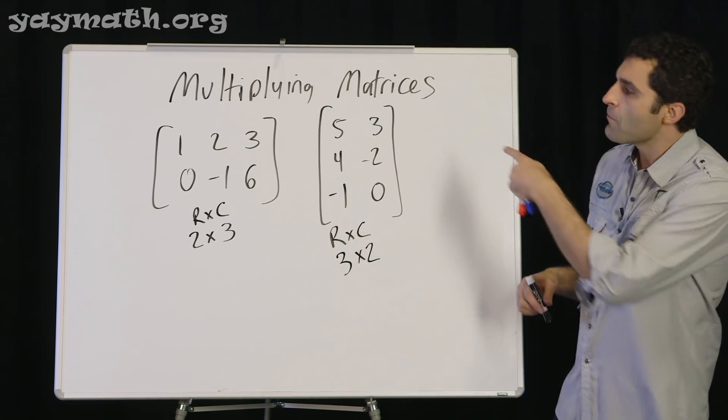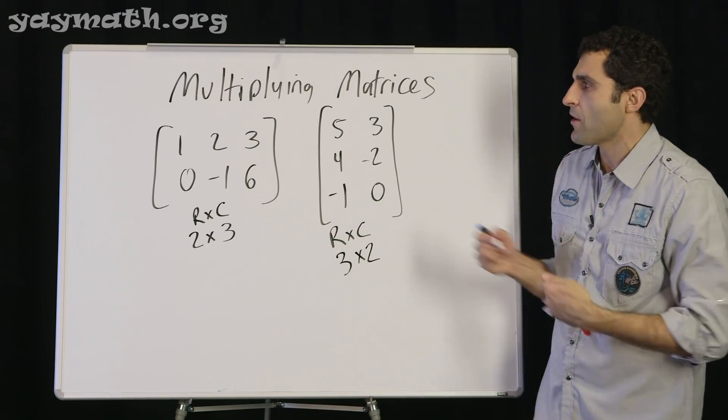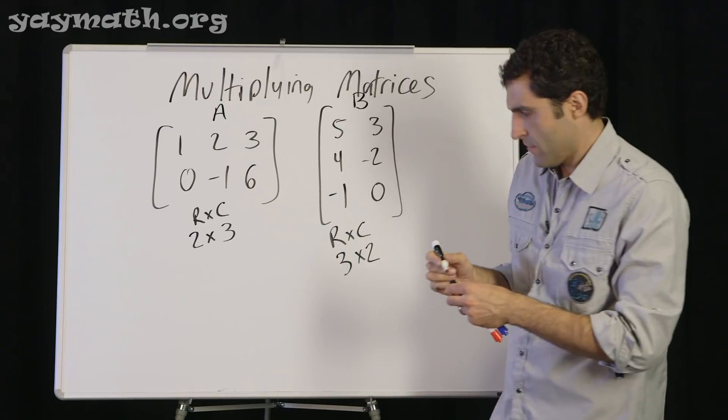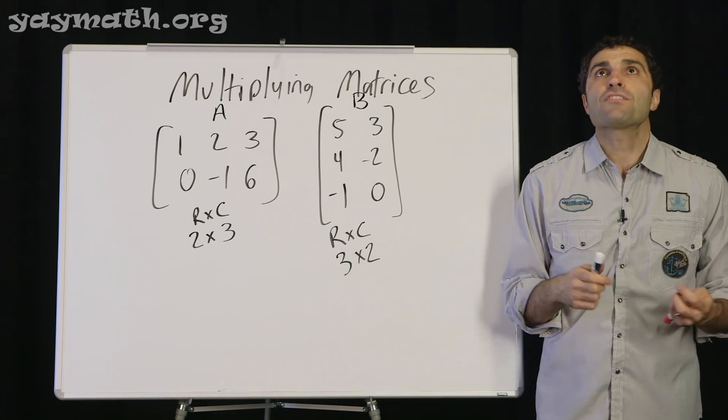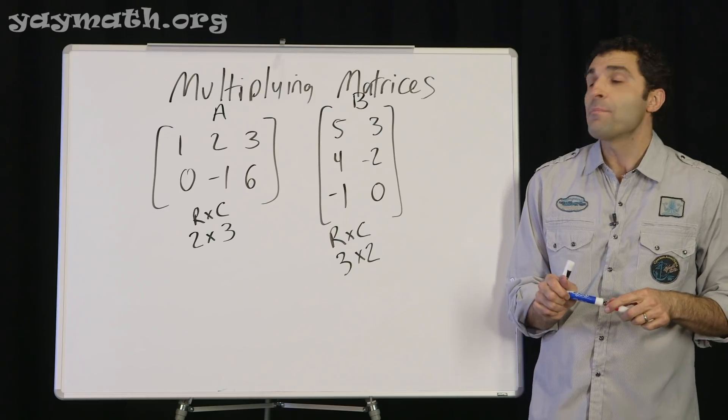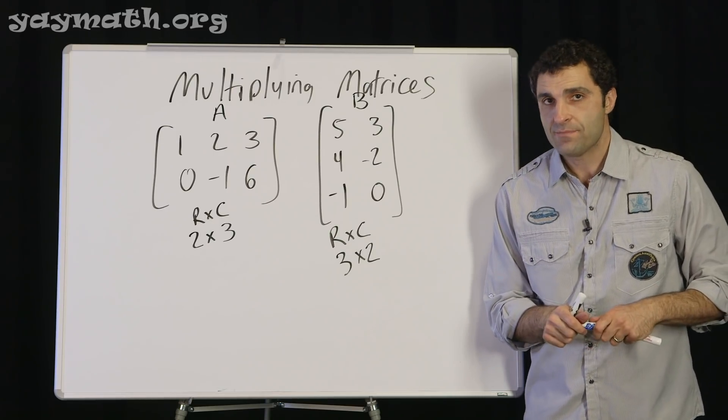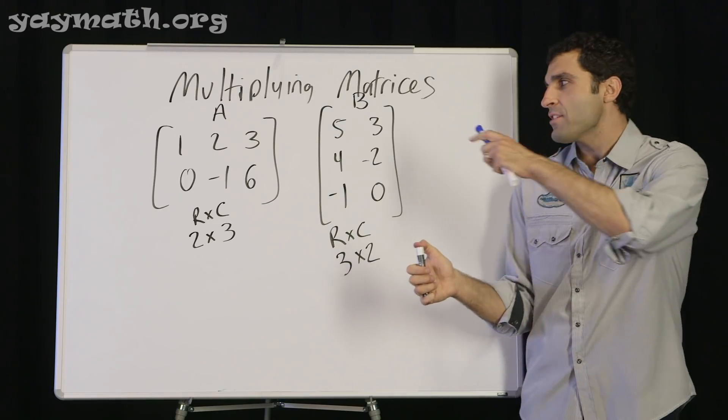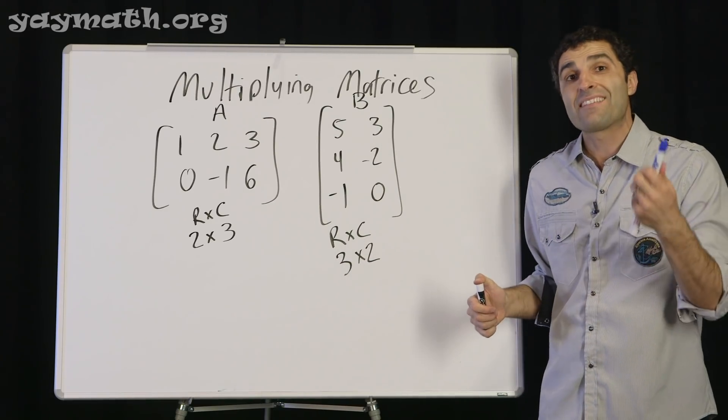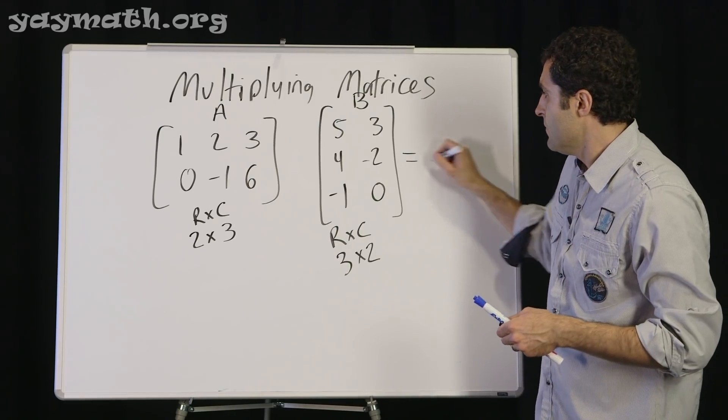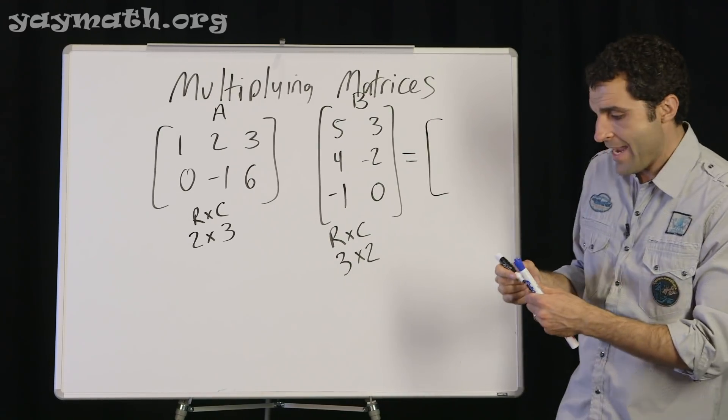So it begs the question, when you multiply these 2 matrices, if we want to call this one A and this one B, what would the dimensions of A times B be? And what would the dimensions of B times A be? Let's actually try what A times B is and see what actually happens.